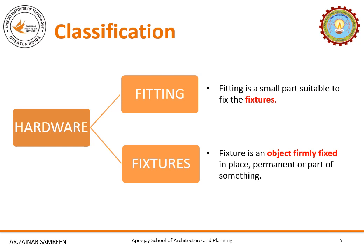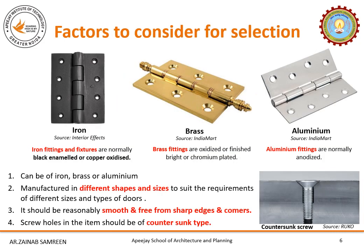Whenever we talk about hardware, it will include fittings and fixtures both. Fixtures are basically objects which are firmly fixed on doors or windows for proper functioning — for example, handles, knobs, etc. Whereas fittings are basically small parts like screws which are used to fix the fixture on doors.